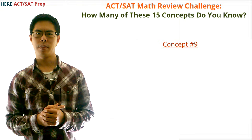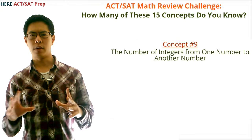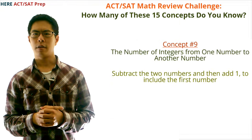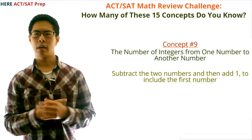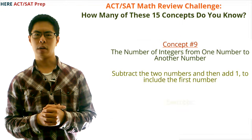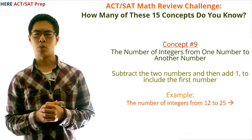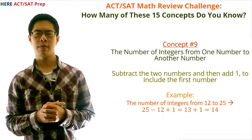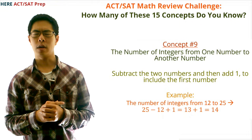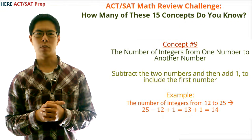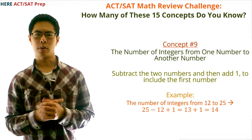Concept number nine: the number of integers from one number to another. To find this value, subtract the two numbers and then add 1 to include the first number. For example, the number of integers from 12 to 25 is 25 − 12 + 1 = 13 + 1 = 14.